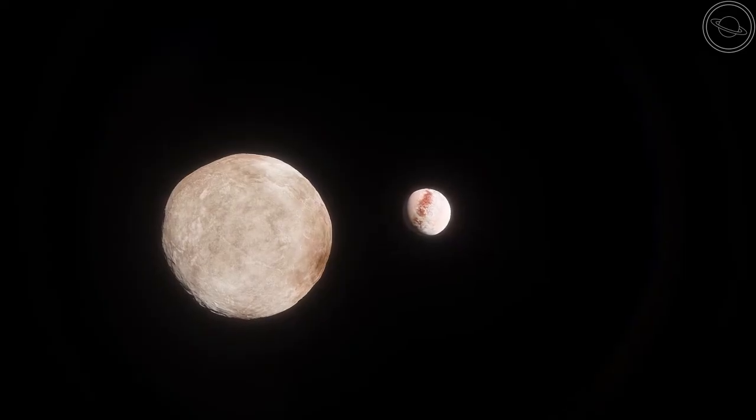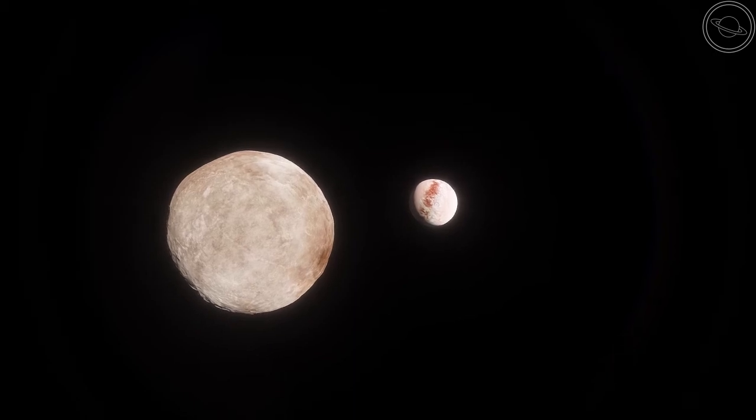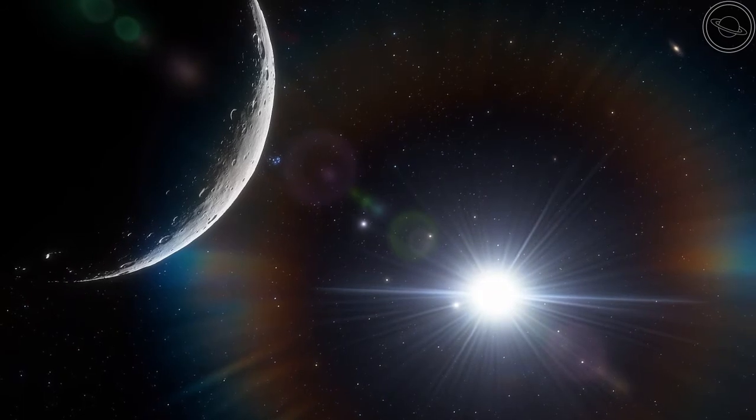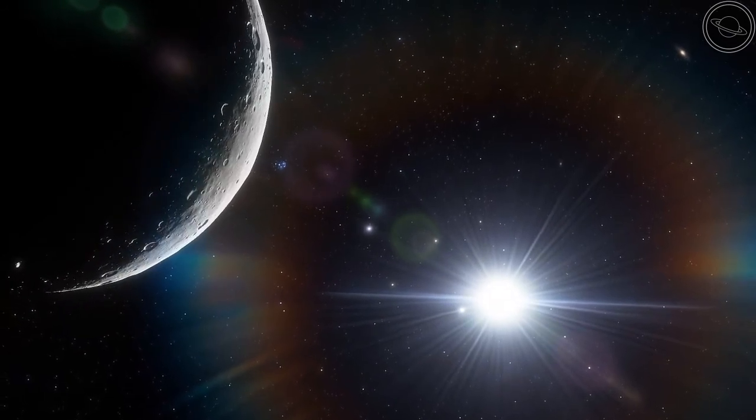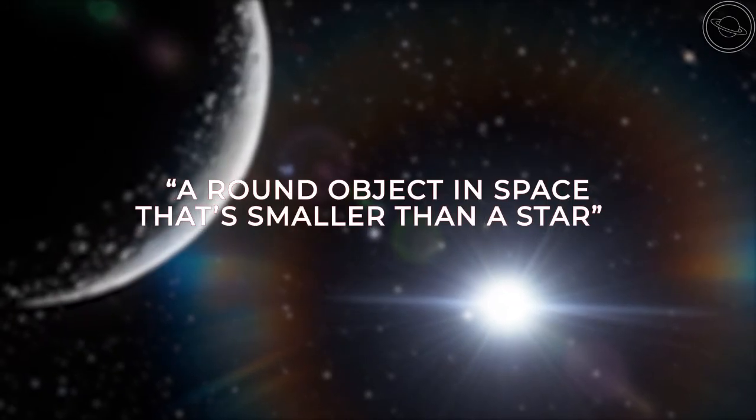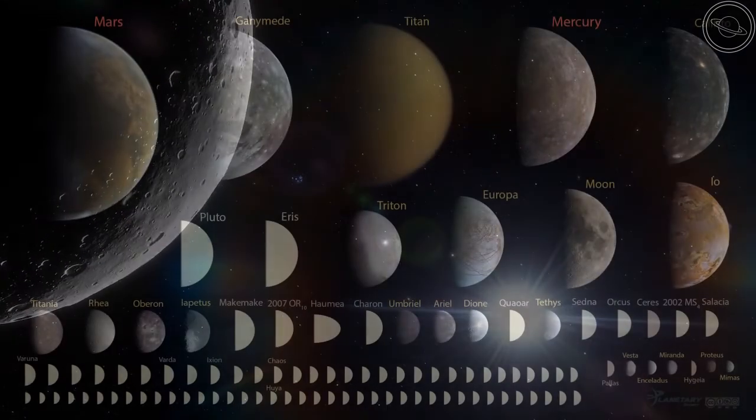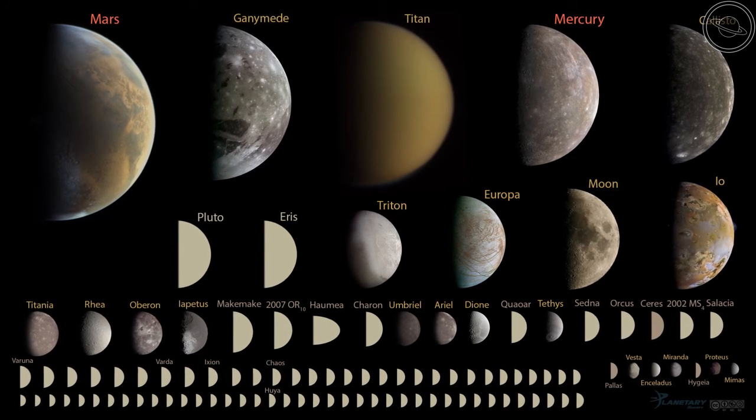This led to many alternative classifications for planets being proposed, although some are more outrageous than others. One such proposal in 2017 defined a planet as a round object in space that's smaller than a star, which is completely vague and pointless as it would cause the solar system to contain 110 planets.